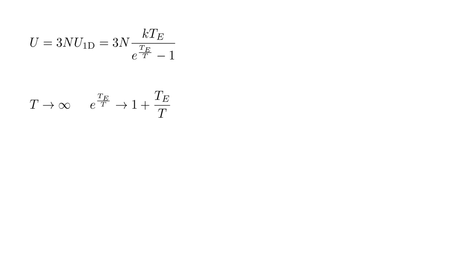Let's look at the high temperature limit, T goes to infinity. In this case, T_E over T goes to zero. Since e to a small exponent is well approximated by one plus the exponent, e to the T_E over T can be replaced by one plus T_E over T. The result is the system energy U reduces to three N k T. The rate of change of U with respect to T is the heat capacity, C equals three N k, the prediction of the Dulong-Petit law.